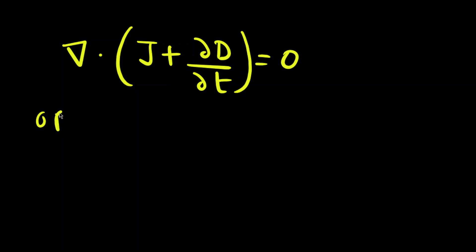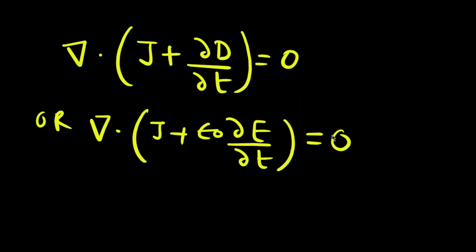Taking the divergence operator ∇ outside, we get J + ∂D/∂t = 0, or we can also write this as J + ε₀∂E/∂t = 0.